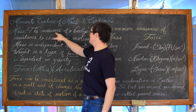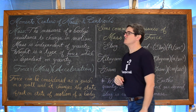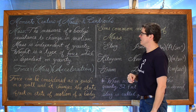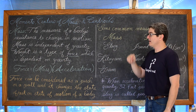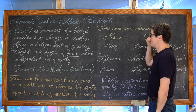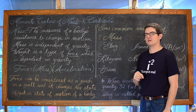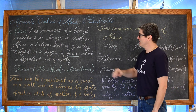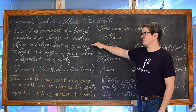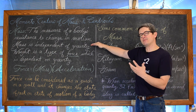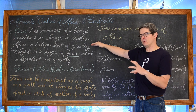Mass is the measure of a body's resistance to change in motion, and mass is independent of gravity. There's a wonderful example of this — how mass and weight are really not the same thing, even though a lot of people believe that it is.